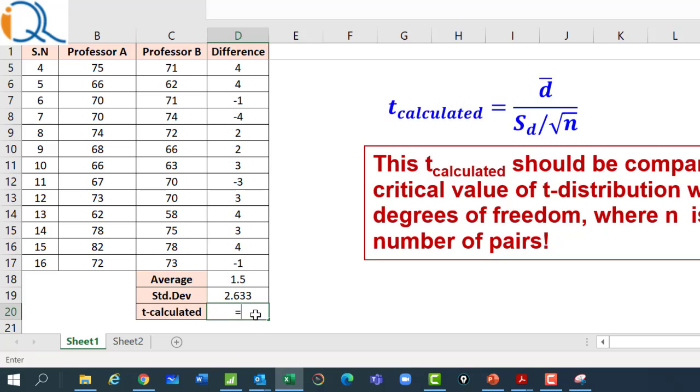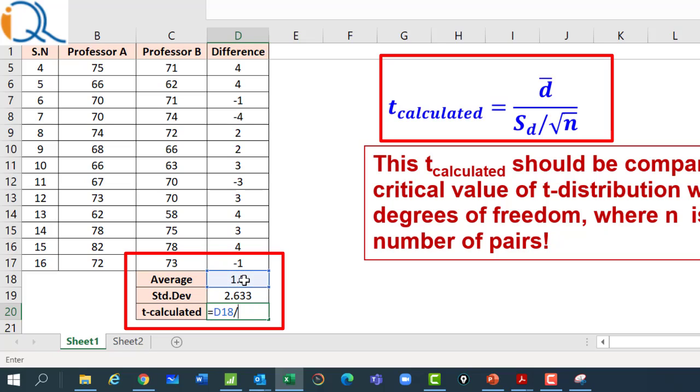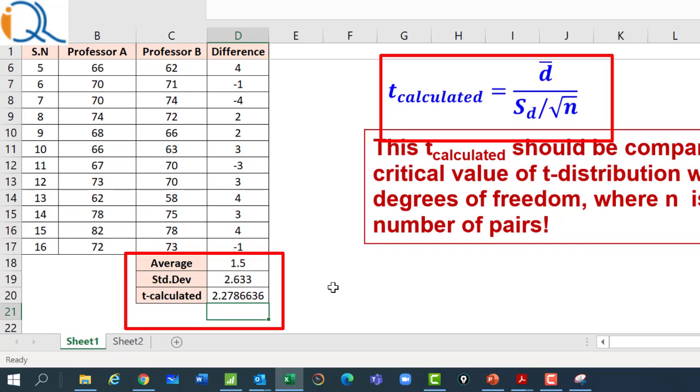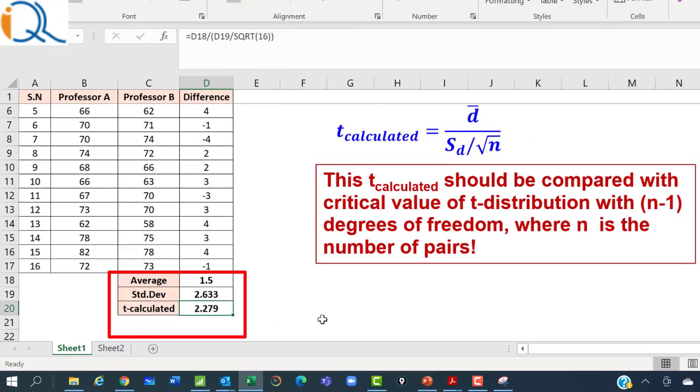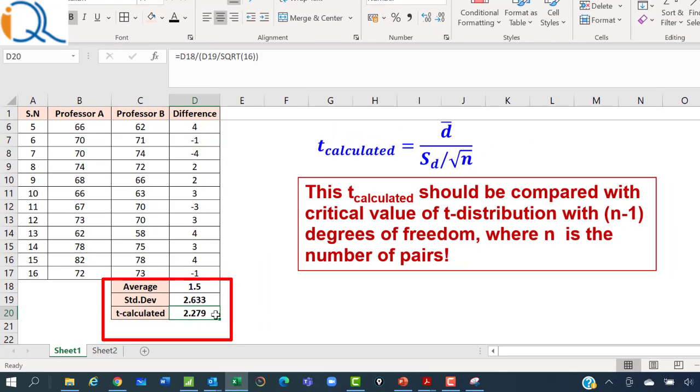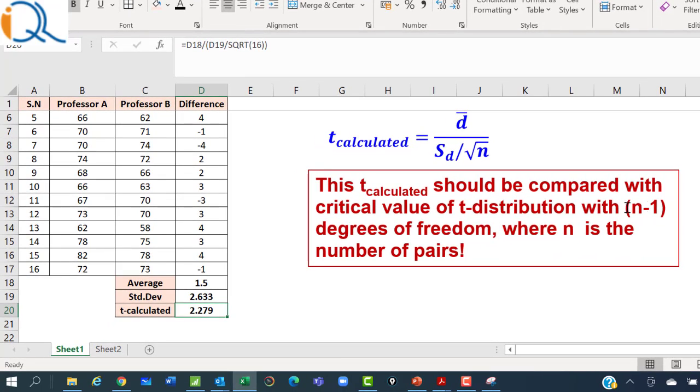Now the t calculated will be equal to, we will substitute these values in the formula. The numerator is d̄ that is equal to 1.5 divided by, I should use bracket, the standard deviation is 2.633 divided by square root of n is SQRT of 16. That is actually 4, but we will use the formula. And that gives us a t calculated value of 2.278. Again, we will round it off to 3 decimals to get these 3 values. So the average is 1.5, standard deviation is 2.633, and the t calculated is 2.279.